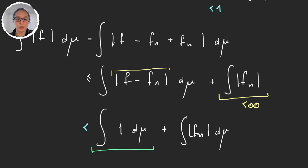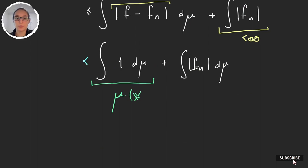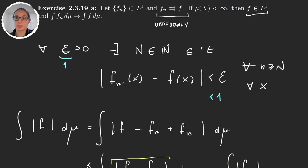And now what happens with this integral? We are integrating the constant function one on the entire space. Well, this is the measure of the entire space. But our hypothesis was our measure is finite, so this is a finite number. So we have one finite number plus another finite number—this is also finite—and this implies that f is a function in L1. Great, so we proved the first part.